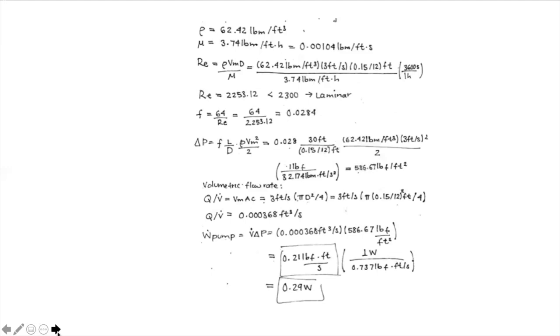After applying the friction factor and multiplying by volumetric flow rate, you get the pumping power requirements. From the Reynolds number with the given data, we get a Reynolds number of approximately 2,253 — less than 2,300, which indicates laminar flow.